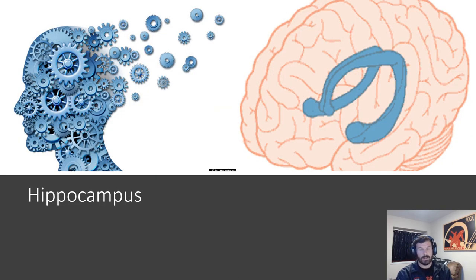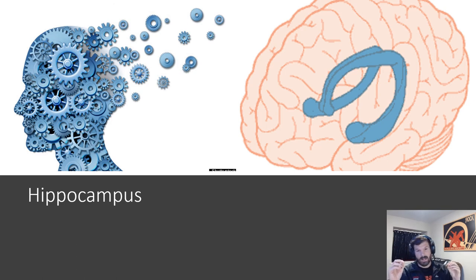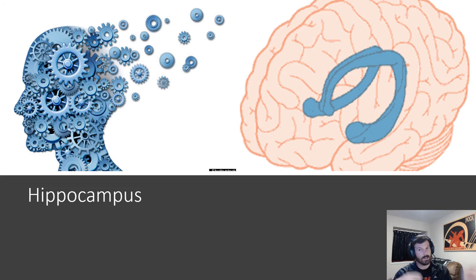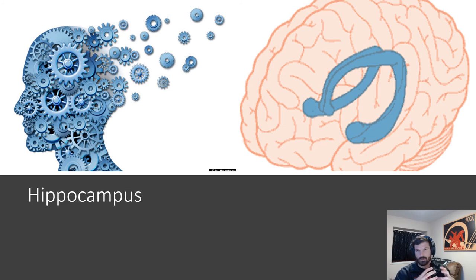Next we have the hippocampus. The hippocampus helps us consolidate information — our processing of short-term to long-term memory happens here. Your ability to learn someone's name, hold onto that information for a week, and then run into that person again and recognize them — that's your hippocampus. Right now your hippocampus is trying to take the short-term information you're learning and transfer it to long-term memory so you can hold onto it and use it on a test.